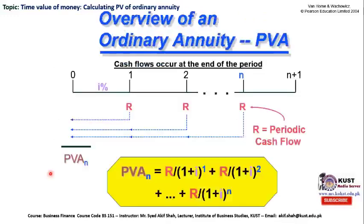This is the basic agenda of this lecture — to calculate and understand the present value of ordinary annuity. This is a general overview of an ordinary annuity. On the timeline, time zero means that today you, as an investor, are going to take an investment decision. That is why this is known as time zero or the current time period. The variable i represents the compound interest rate, which has been clearly explained in the first lecture on time value of money.